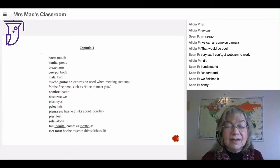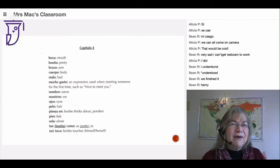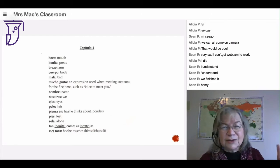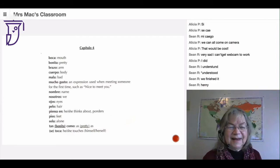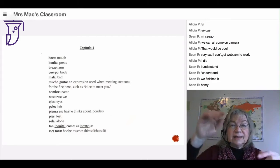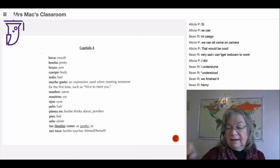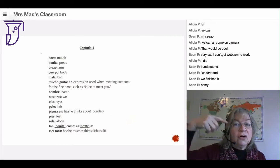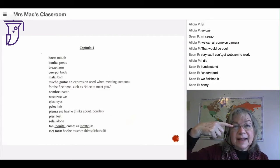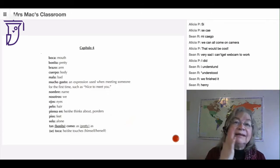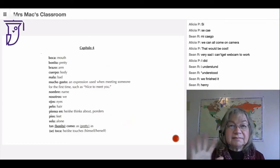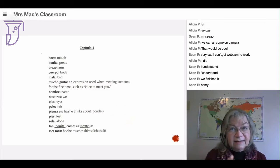Pies - feet. Sola - alone. Tan something como is as blank as. So tan mala como - as bad as. Tan bonita como - as pretty as. Tan feo como - Victor es tan feo como la basura - as ugly as trash. He's not. And toca is touches.